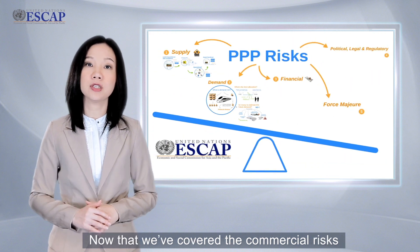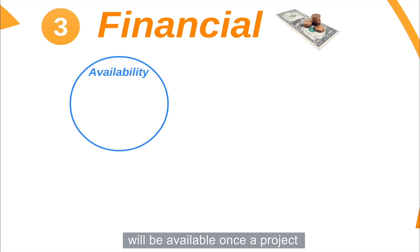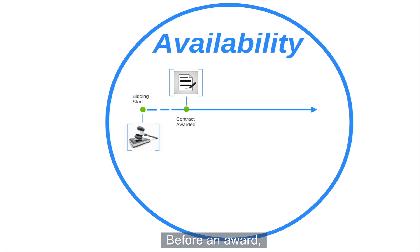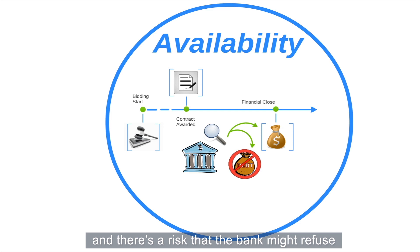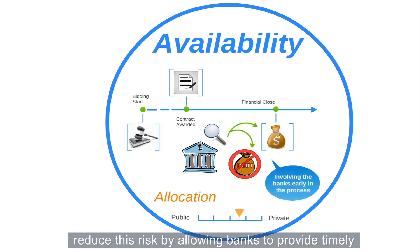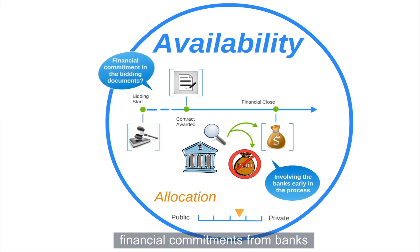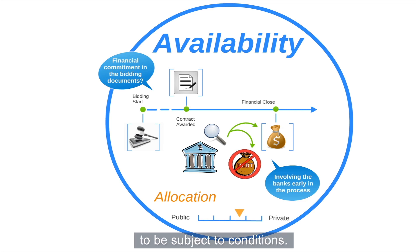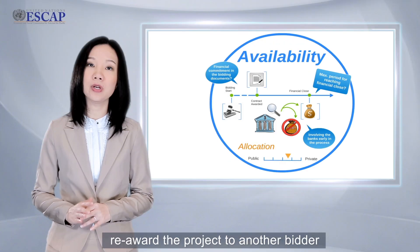Now that we have covered the commercial risks on both the supply and demand sides, let's review the financial risks faced by PPP projects. The first financial risk concerns whether funds will be available once a project is awarded to a preferred bidder. Before an award, the bank may not be in a position to provide a detailed review of project documents in order to make a final decision, and there is a risk that the bank might withdraw financing following their due diligence. This is a shared risk, as both parties have invested considerable time and money by this stage. Involving banks in the process early can reduce this risk. The public authority can also request financial commitments from the bank, included in the bidding documents, though this may increase transaction costs. The public authority might also set a maximum period for reaching financial close, beyond which it has the right to re-award the project to another bidder.